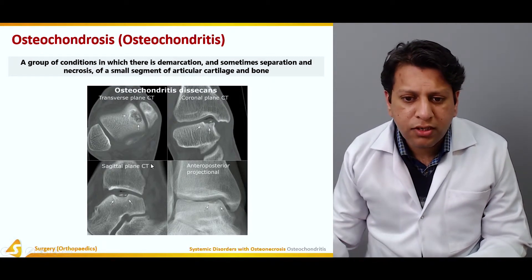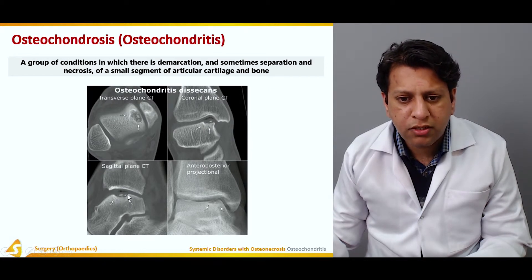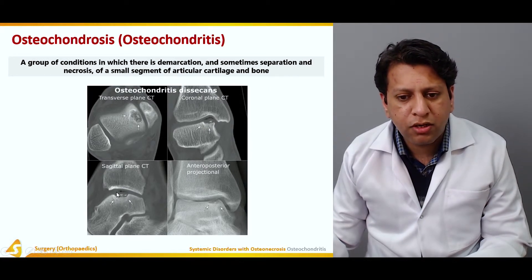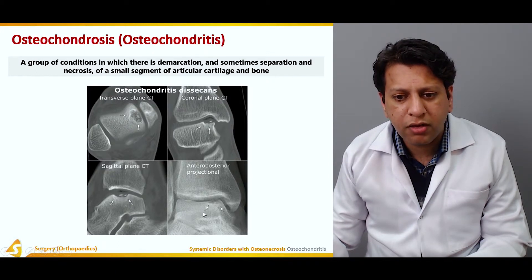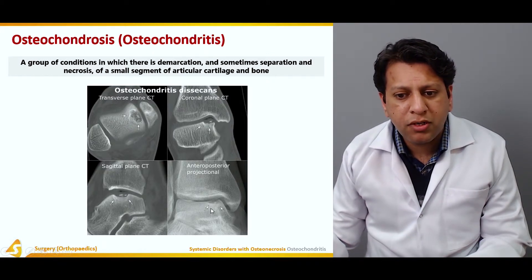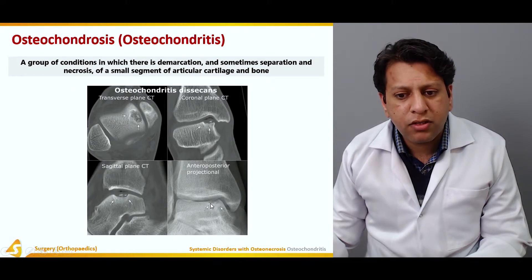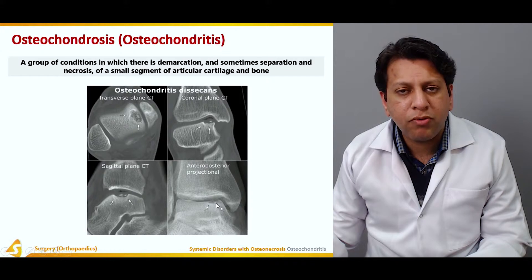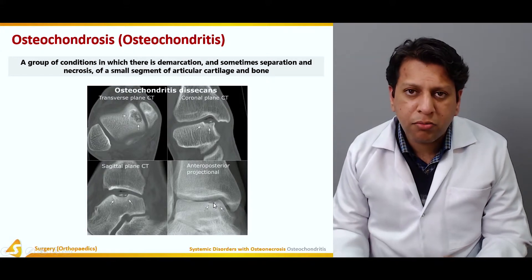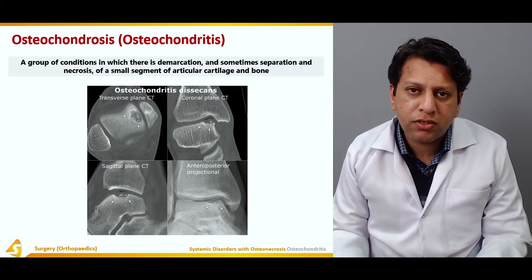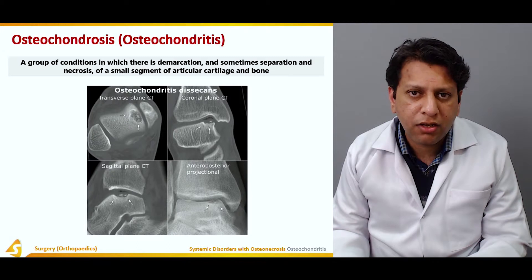This is also showing a sagittal view of the same talus, showing a depression as the bone has actually necrosed and the articular surface has collapsed. The same patient may have this kind of X-ray in which there are definite lucencies along with a very small rim of sclerosis, which is probably the dead bone attached to the cartilage.